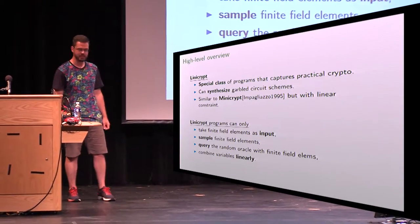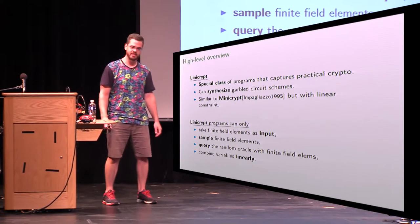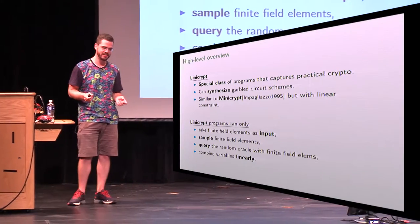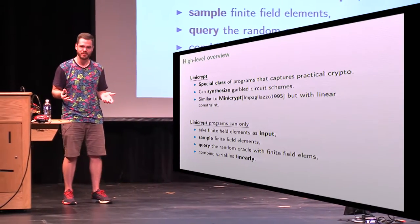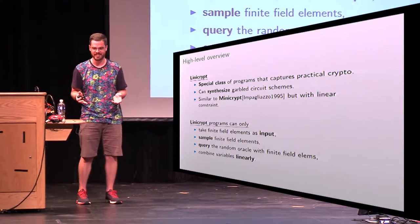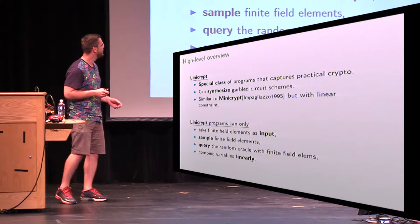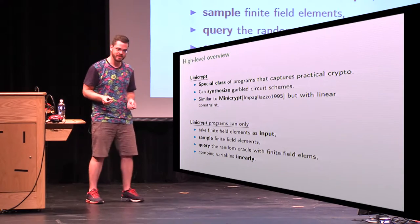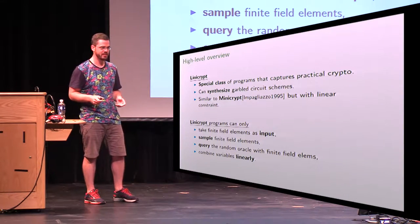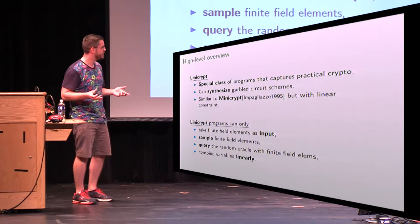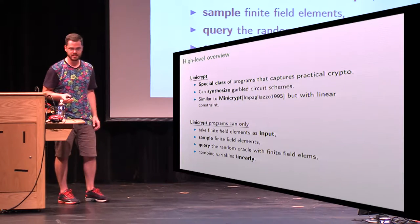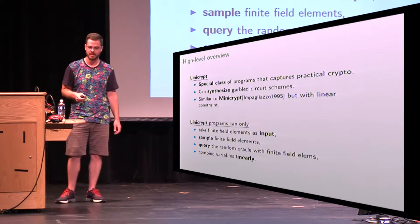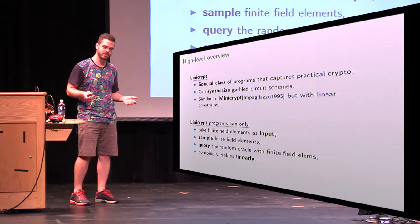LinnyCrypt is a special class of programs that captures some subset of practical cryptography, in the sense that practical cryptography uses the one-way function and linear combinations of it. And that's all that LinnyCrypt does. But having this requirement that we only use linear combinations of things we know gives us the ability to synthesize many things — in particular garbled circuit schemes like YOWS, or optimizations to that like FreeXOR.